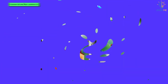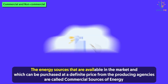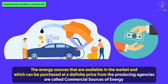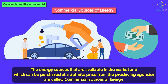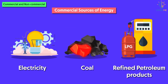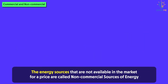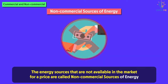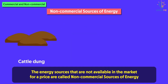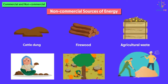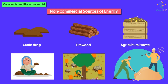The energy sources that are available in the market and which can be purchased at a definite price from producer agencies are called commercial sources of energy. For example, electricity, coal, and refined petroleum products. While the energy sources that are not available in the market for a price are called non-commercial sources of energy. For example, cattle dung, firewood, and agricultural waste. These sources are traditionally gathered and are not available in the markets.